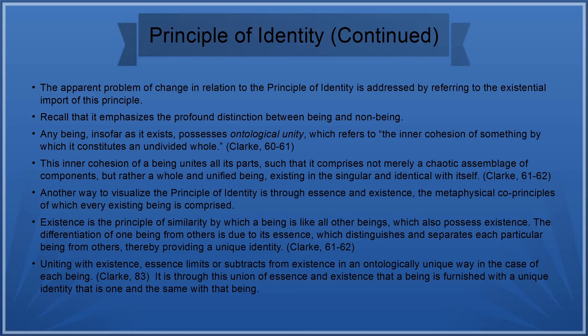Another way to visualize the principle of identity is through essence and existence, the metaphysical co-principles of which every existing being is comprised. Existence is the principle of similarity by which a being is like all other beings which also possess existence. The differentiation of one being from others is due to its essence, which distinguishes and separates each particular being from others, thereby providing a unique identity. Uniting with existence, essence limits or subtracts from this existence in an ontologically unique way in the case of each being. It is through this union of essence and existence that a being is furnished with a unique identity that is one and the same with that being.